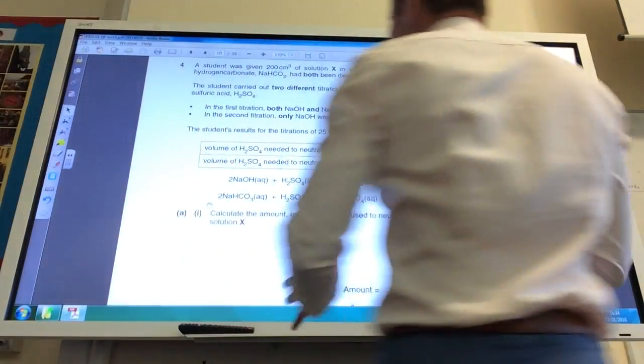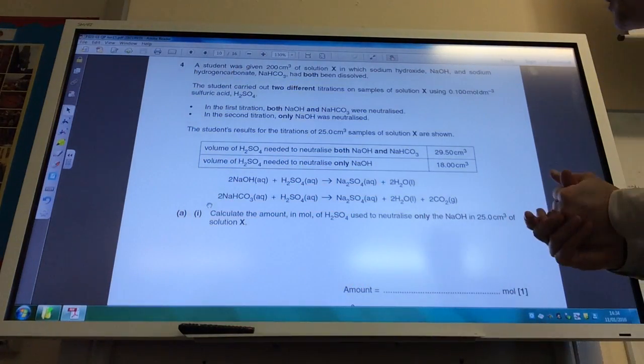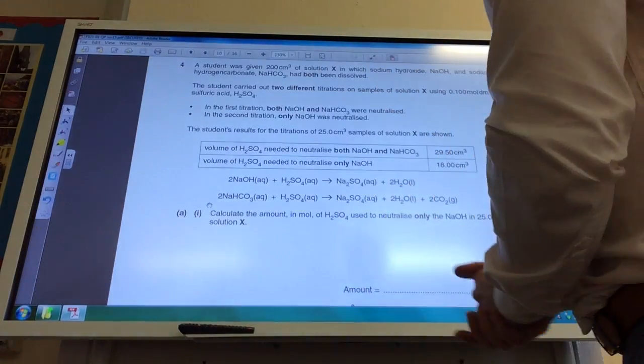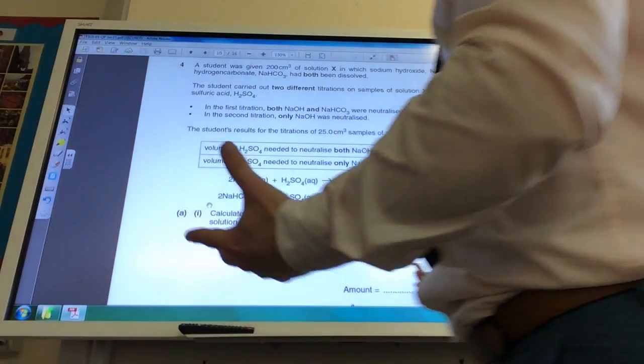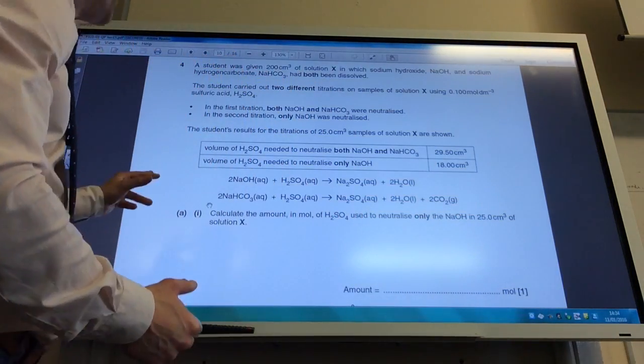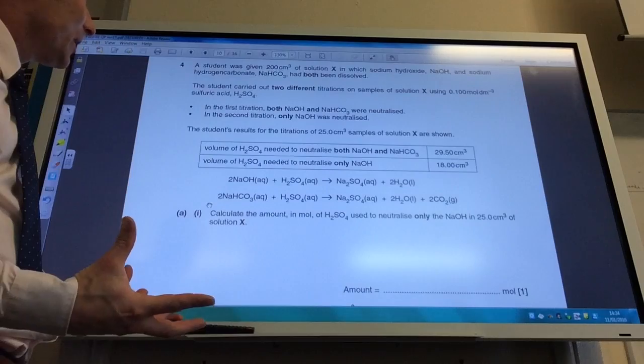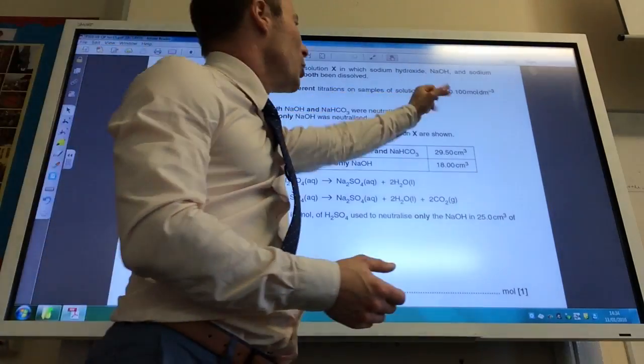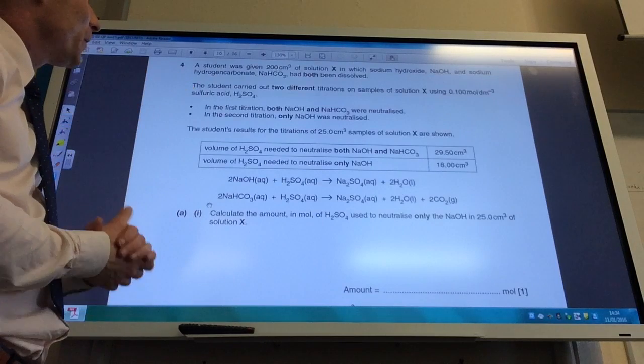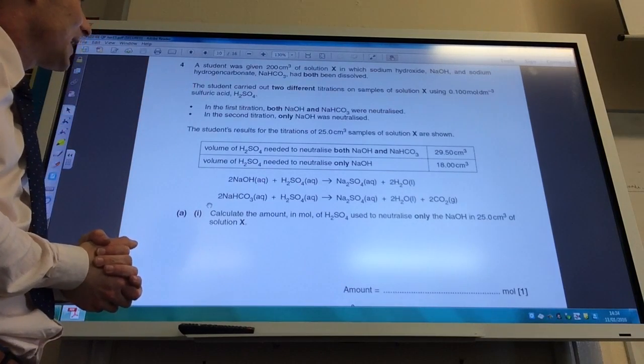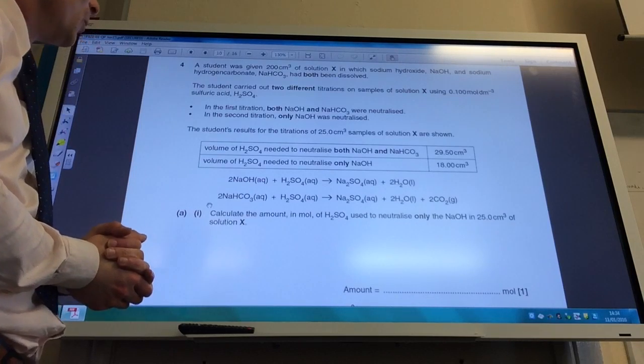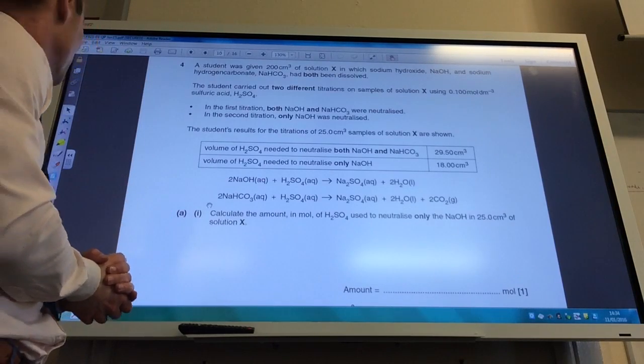Right, so quite a lot of information is given to you in question four, which may freak people out initially, but it does talk you through it, so don't panic. Students have given 200 cm3 solution X, in which sodium hydroxide and sodium hydrogen carbonate have both been dissolved, carried out two different titrations using 0.1 molar sulfuric acid. In the first titration, both sodium hydroxide and sodium hydrogen carbonate were neutralised. In the second one, only sodium hydroxide was neutralized, and the students' results are shown below.